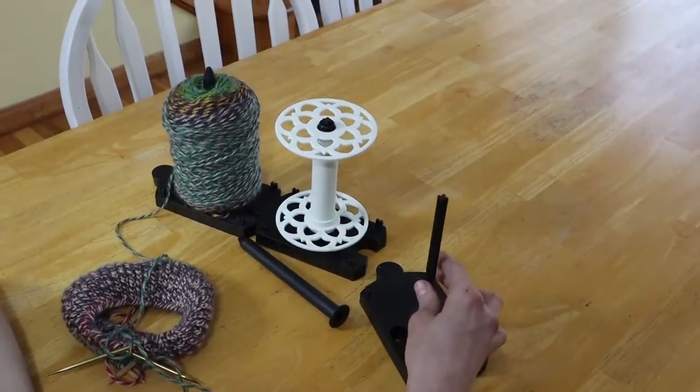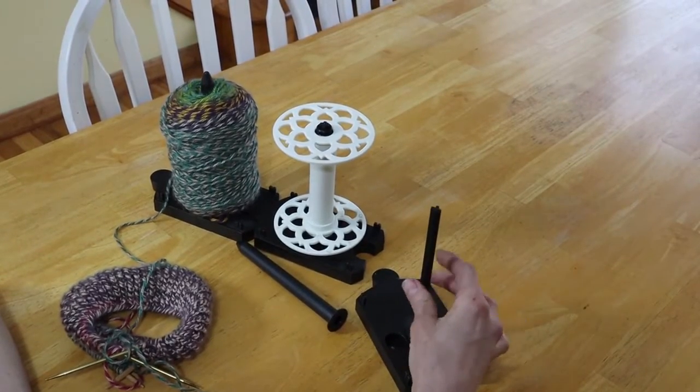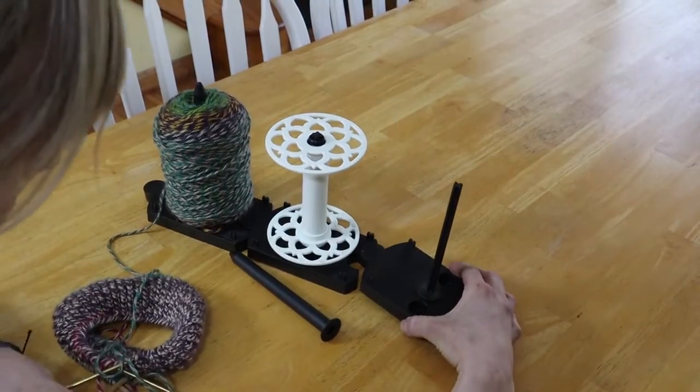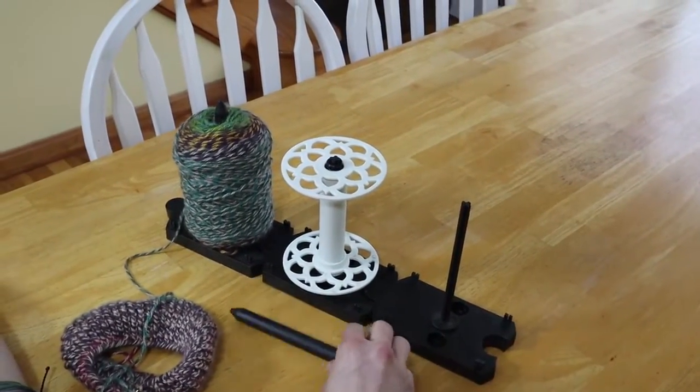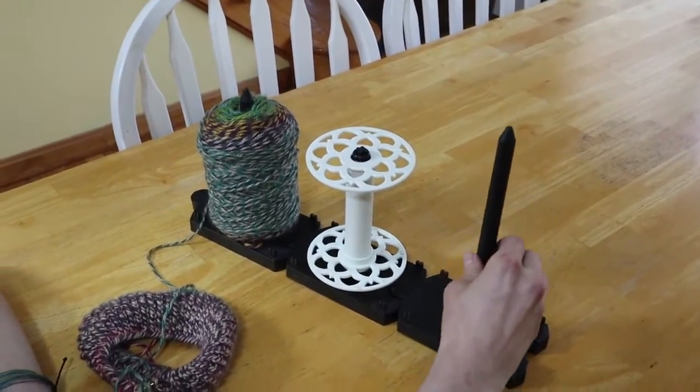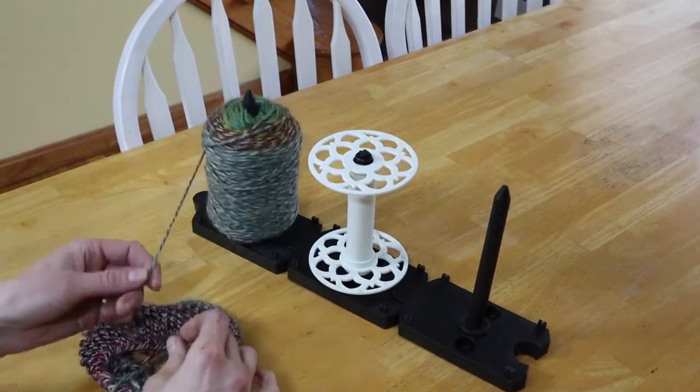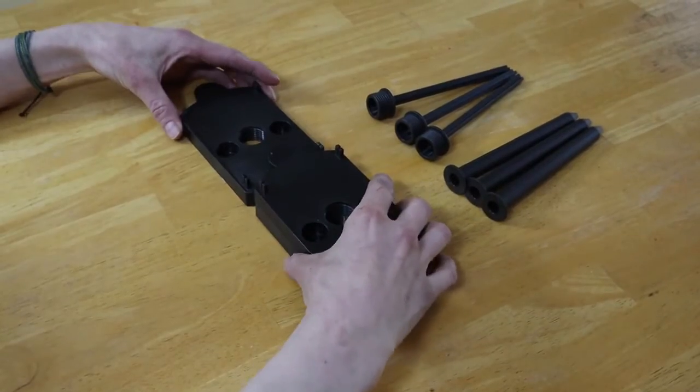An optional part of this Kickstarter are these puzzle-shaped lazy kates, which hold your bobbins while plying. Their shape allows you to connect as many of them as you want together. They also come with this yarn spike so they can be used when knitting to prevent your yarn ball from rolling away. They even collapse like this for easy travel.